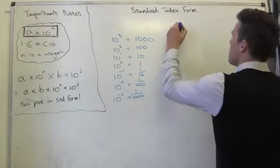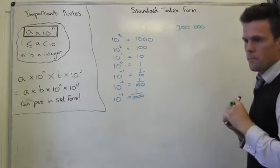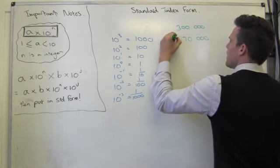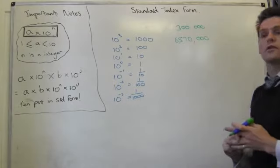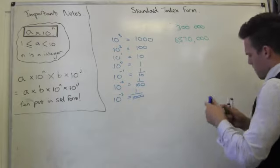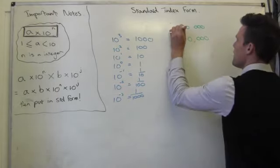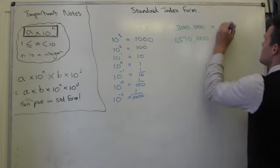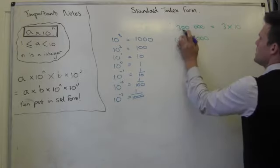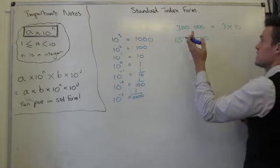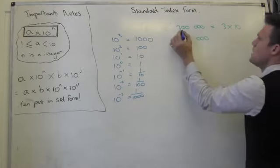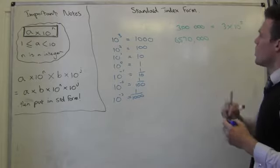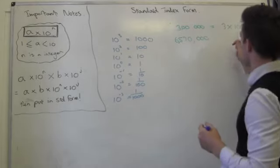Let's do some examples. If I want to write 300,000 in standard form, first I'm going to imagine putting my decimal there. Straight away I write 3, and I have to think what I need to do to 3 to get back to 300,000 — I'm going to have to times it by 10 to the something. In this case I have to times it by 100,000. I count: 1, 2, 3, 4, 5 — times 10 to the 5. That will get my decimal back to where it should be.